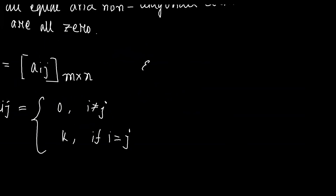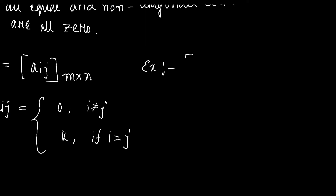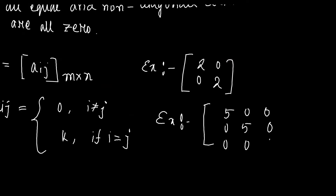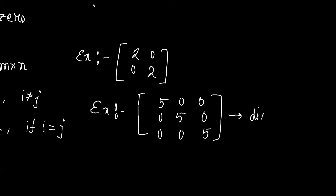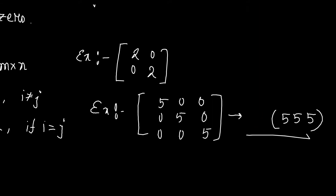Let us take an example. Suppose a 2×2 order matrix: [2, 0; 0, 2]. The leading diagonal elements are both 2 — same and equal — and the non-diagonal elements are zero, so this is a scalar matrix. Another example is the 3×3 matrix [5,0,0; 0,5,0; 0,0,5]. The leading diagonal elements are all 5 and the non-diagonal elements are all zero. This can also be written as diag(5, 5, 5).